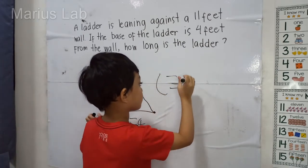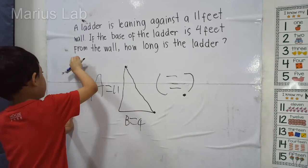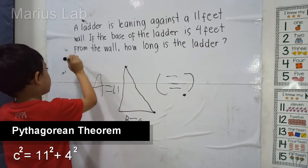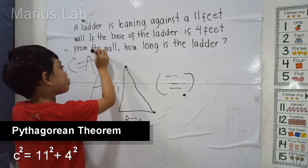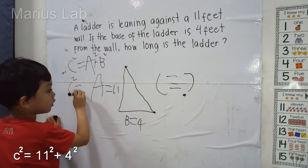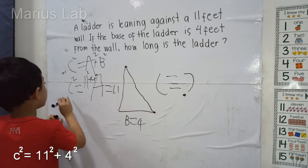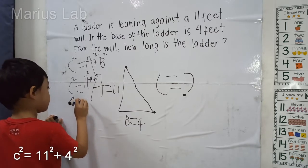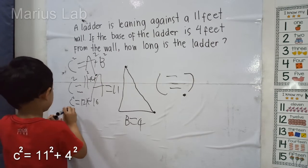C squared equals A squared plus B squared. Then C squared equals 11 squared plus 4 squared. Then C squared equals 121 plus 16, and C squared equals 137.